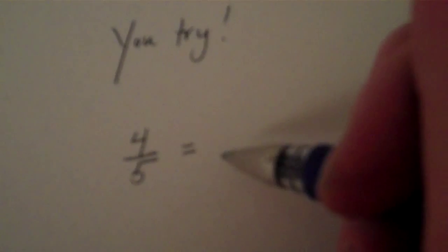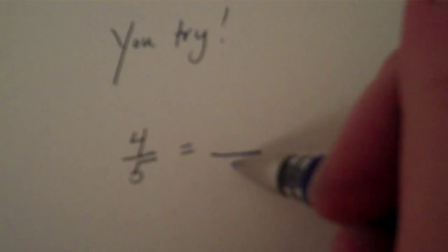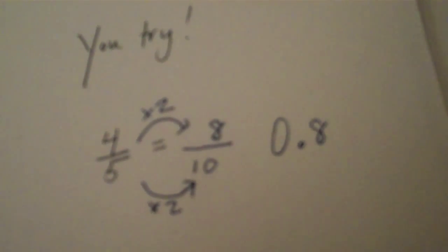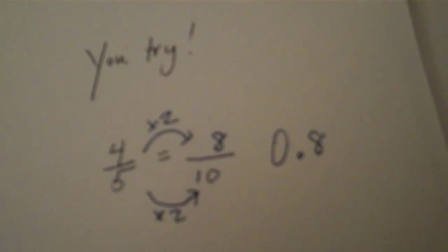You try. Four fifths. Four fifths can be easily crushed into tenths. How many times do we have to crush fifths? Twice. So how many times do we have to crush the four? Twice. It turns into eight tenths, which we can easily write as a decimal. No problem at all.